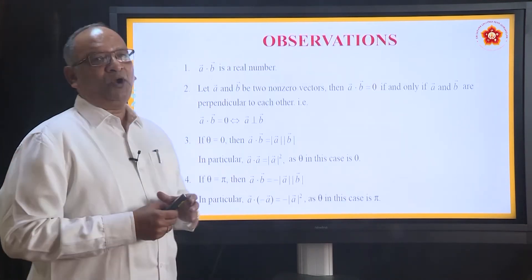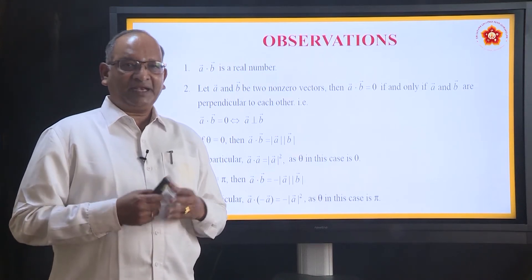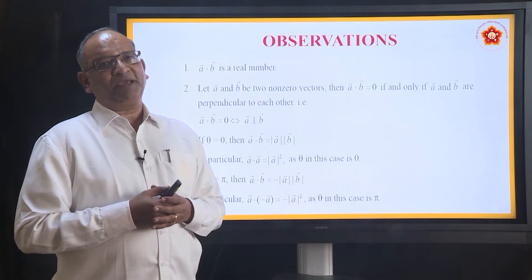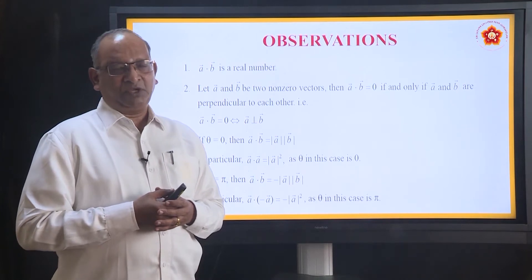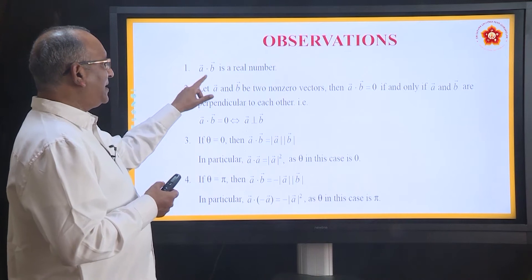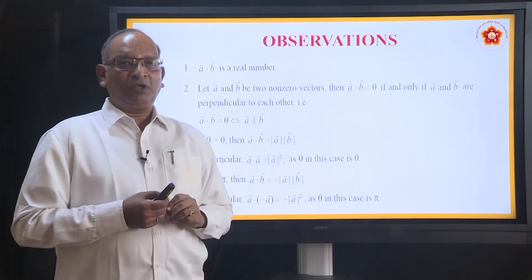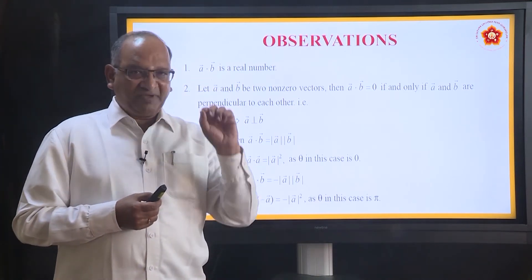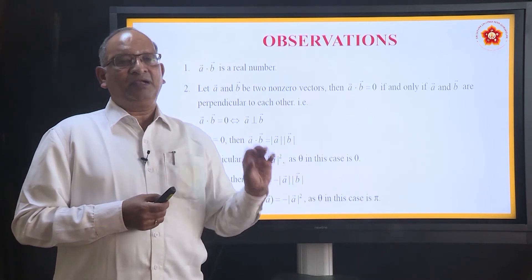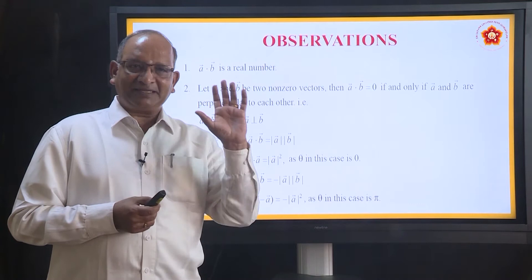These are some very important observations, and they are important because while doing problems we will be making use of them. So please observe carefully. A dot B is a real number. What do you mean by that? When we are taking dot product, the answer is not a vector — the answer is a scalar, and this scalar is nothing but a number. What kind of number? Any real number.